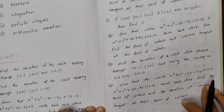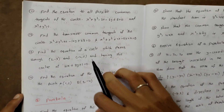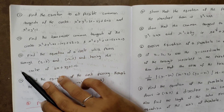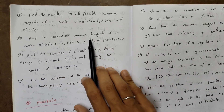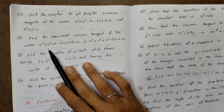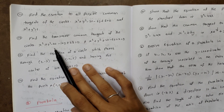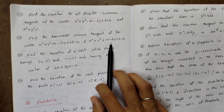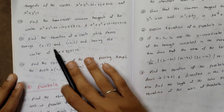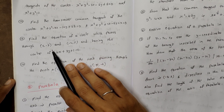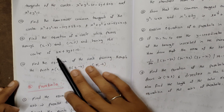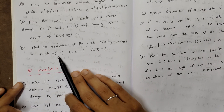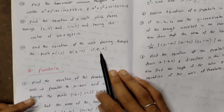That covers 10 circle questions. The 11th question: find the equation of all possible common tangents of the circles x²+y²=0 and x²+y²=1. Find the transverse common tangents of x²+y²-4x-10y+28=0 and x²+y²+4x-6y+4=0. Find the equation of the circle passing through (2,-3) and (-4,5) with center on 4x+3y+1=0. And the circle through points A(1,2), B(3,-4), C(5,-6).